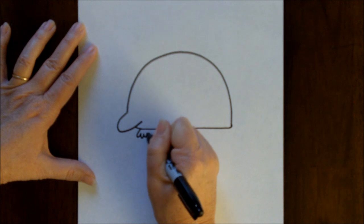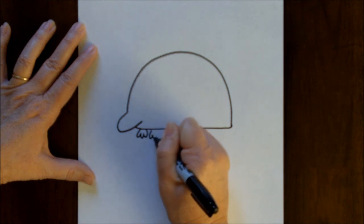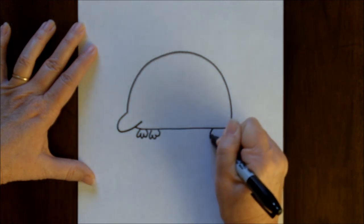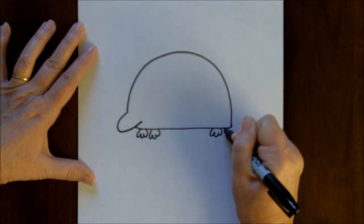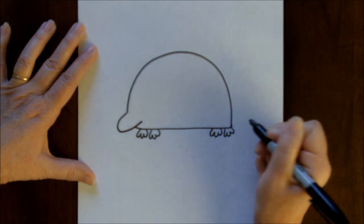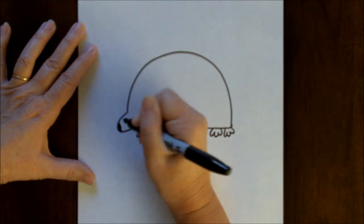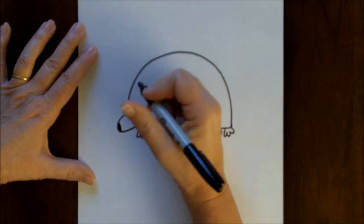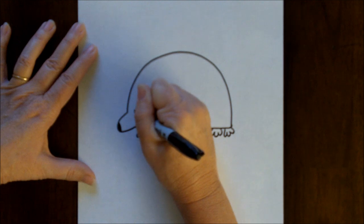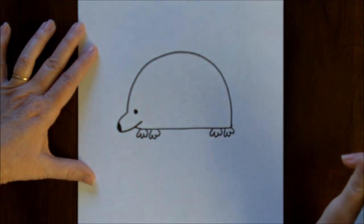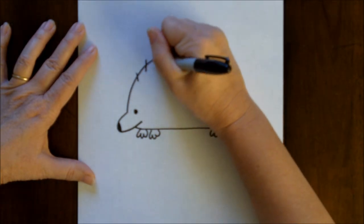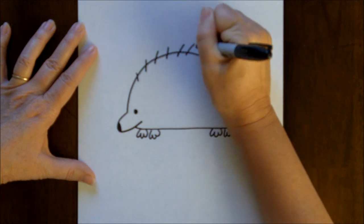Some little curved lines for feet. Now let's go back up to the front and we'll make a little black area for his nose and an eye. Now for his spikes, for his quills, we're just going to make them basically going from front to back.